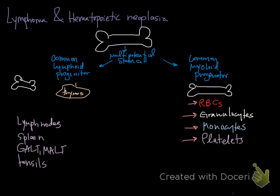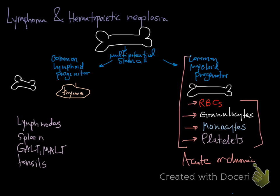When we talk about hematopoietic neoplasm, it can occur anywhere within here and those would be considered myeloproliferative or myeloid neoplasms. They can be acute, meaning blast forms, or chronic, meaning mature forms. Chronic forms can be hard to differentiate — for example, polycythemia vera is a chronic myeloproliferative disease of red blood cells, and essential thrombocytemia is a chronic myeloproliferative disease of mature platelets.